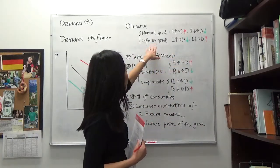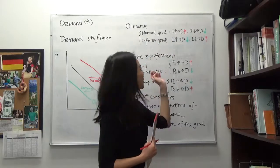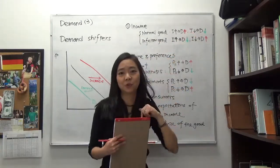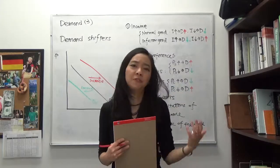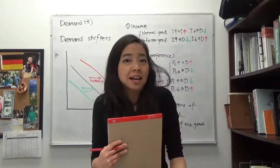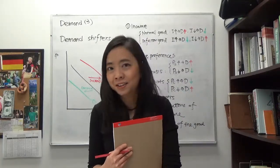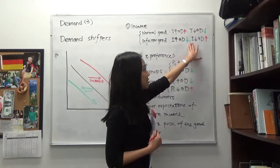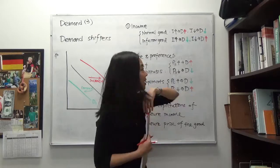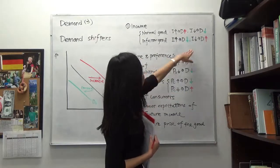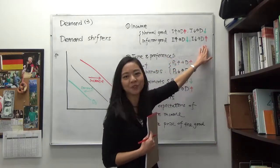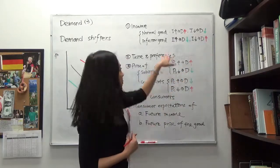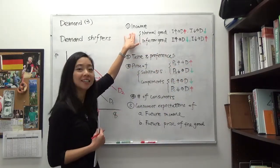On the other hand, if your income goes down, then your demand for normal goods is going to go down. If your income is lower, it's less likely you're going to go out to wine and dine that often anymore. And at the same time, when your income goes down, your demand for inferior goods is going to go up, because you just have to make do with fast food. So that's the first demand shifter: income.